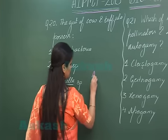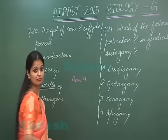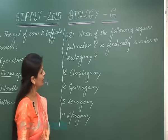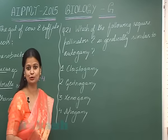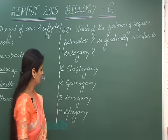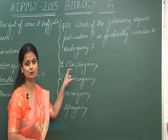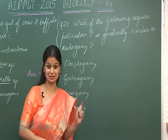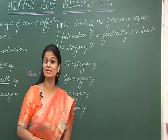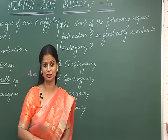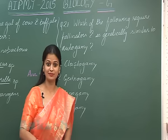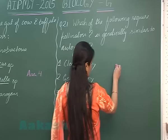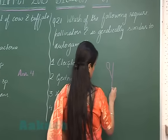Question number 21: which of the following requires pollinators and is genetically similar to autogamy, that is self-pollination? Let's see the first option — cleistogamy. In cleistogamy, there is formation of closed flowers, called cleistogamous flowers, and in these flowers there is always self-pollination because opening of the flower, or anthesis, is absent.